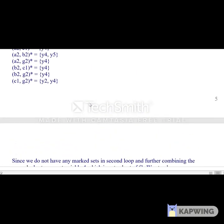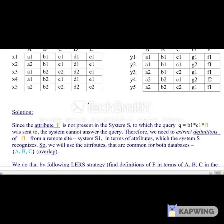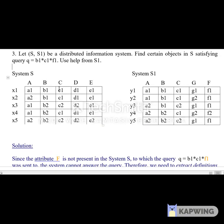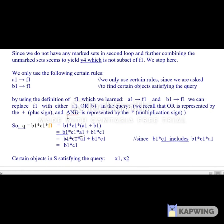Now go to the system S to find the objects that satisfy B1*C1, which is X1 and X2. So X1 and X2 are the certain objects that satisfy the query Q.